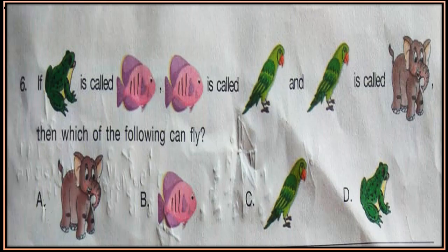Question 6: If frog is called fish, fish is called parrot, and parrot is called elephant, then which of the following can fly? Choose which can fly and what it is called.